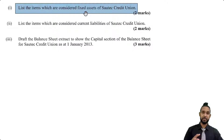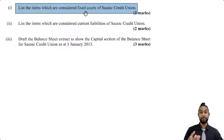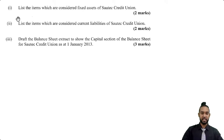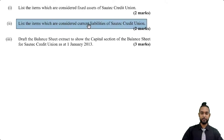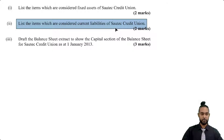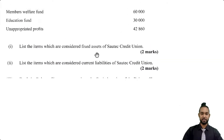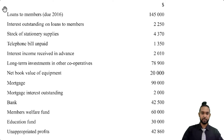Now this was the 2013 paper, so they had not yet started using terms such as non-current assets and statement of financial position. But of course we will use the more up-to-date terminology. The next part of the question says: list the items which are considered current liabilities of South Tech Credit Union. Now let's go up to the list of balances and take a look.